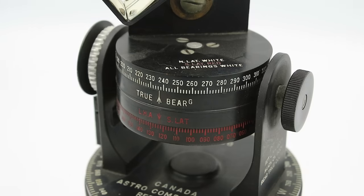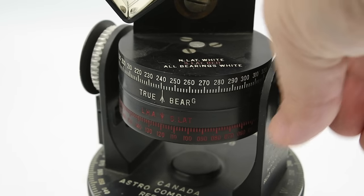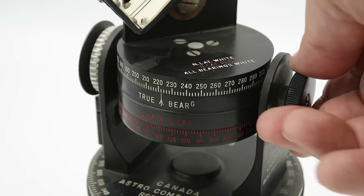The drum itself has two different scales, one white on top for use in the northern hemisphere and a red one on the bottom for use in the southern hemisphere. This can be turned using this other knob on the other side of the uprights, and this allows you to adjust the instrument for your local hour angle.